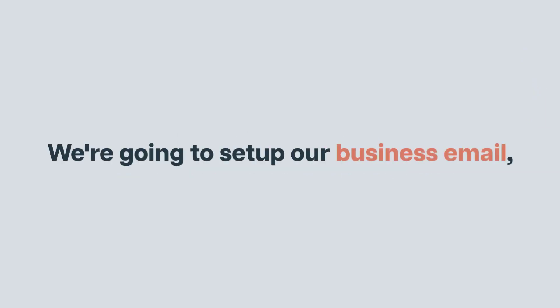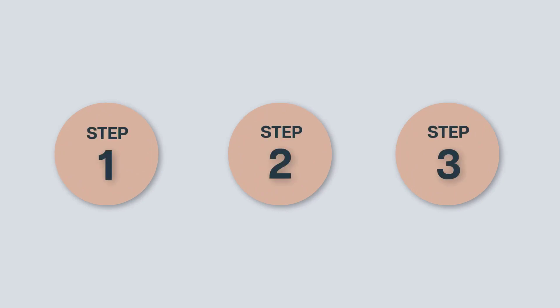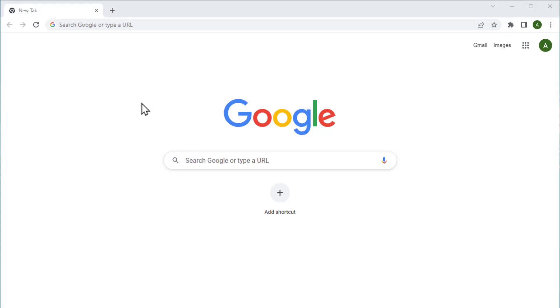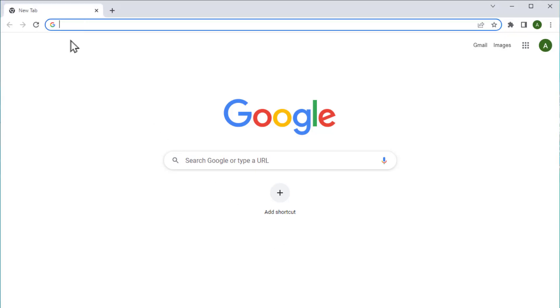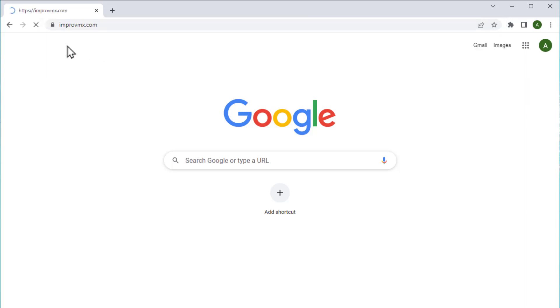We are going to set up our business email in just two parts. The first part is to set up the incoming messages of our business email. To set up the incoming messages, we are going to do three steps. The first step is to create an account in improvemx.com. Let's open a new tab and type improvemx.com and press enter.